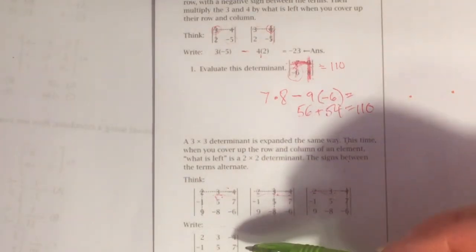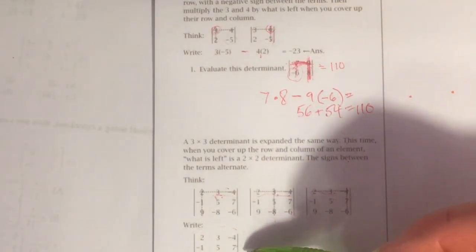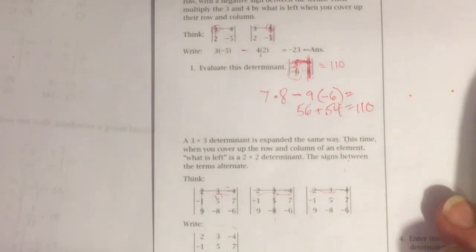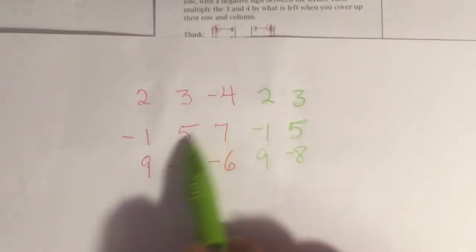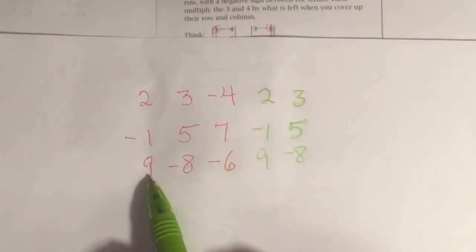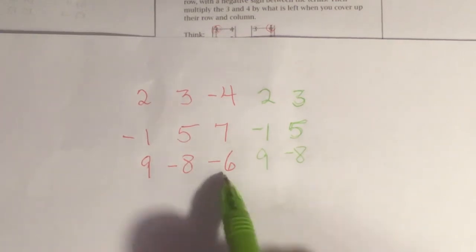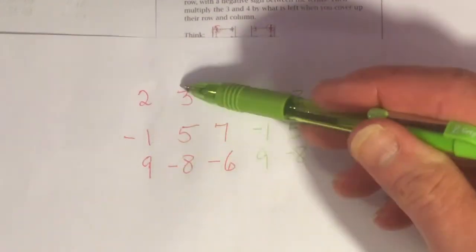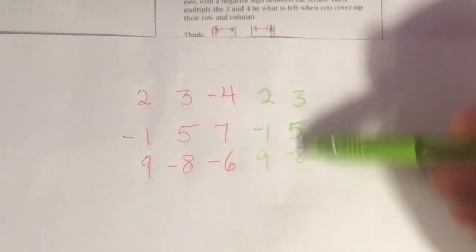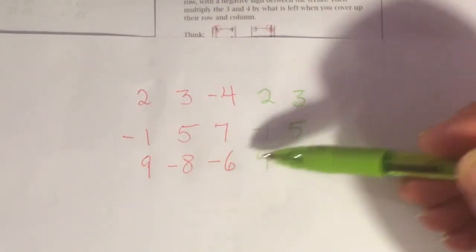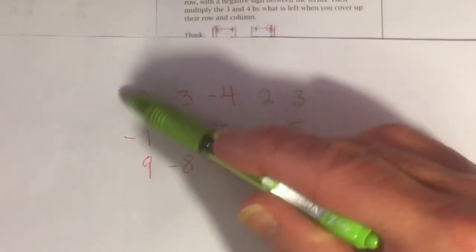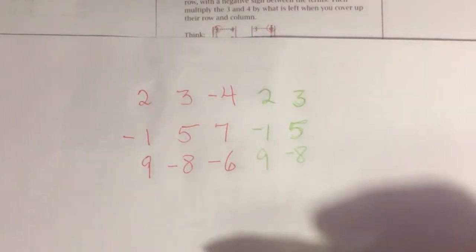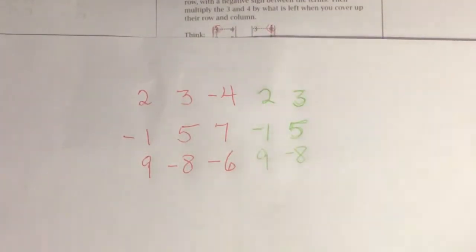2, 3, negative 4, you can't see it, but you've got it on your paper. 2, 3, negative 4, negative 1, 5, 7, 9, negative 8, negative 6. And then in another color over here, I copied these two columns. And I did it in another color so that we wouldn't get confused about whether or not it was part of this matrix. It's not, but here's what we're going to do.